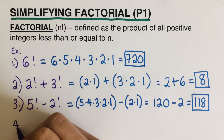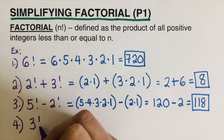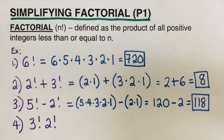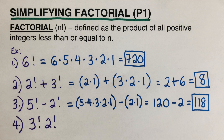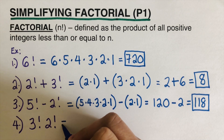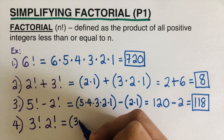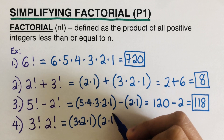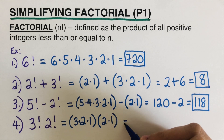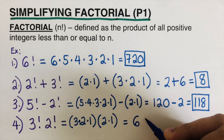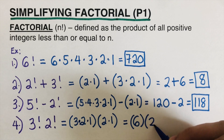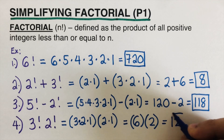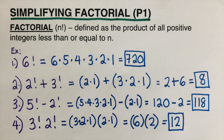Try this next problem on your own: 3 factorial times 2 factorial. Pause the video when you're done to check your answer. 3 factorial is 3 times 2 times 1, which equals 6. 2 factorial is 2 times 1, which equals 2. So 6 times 2 equals 12. The answer is 12.